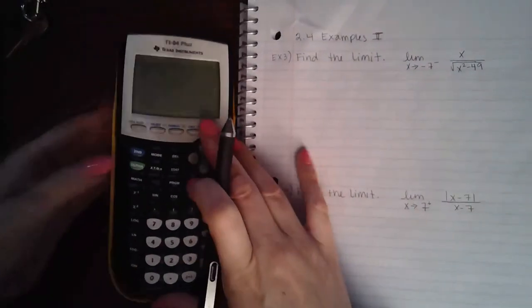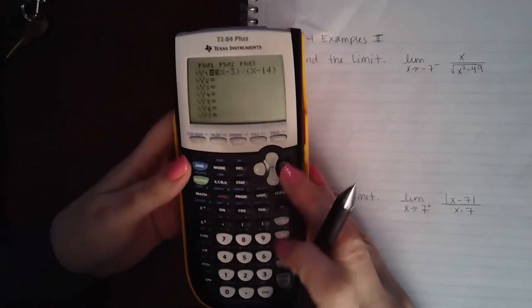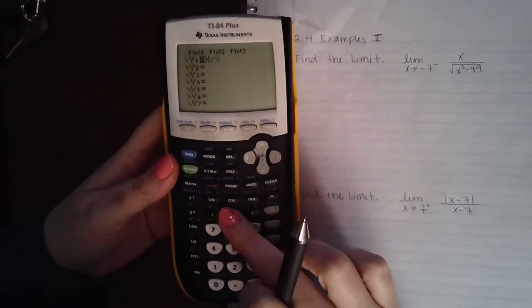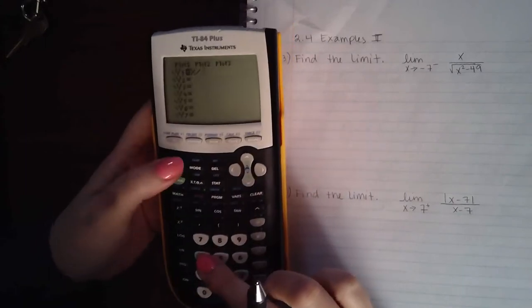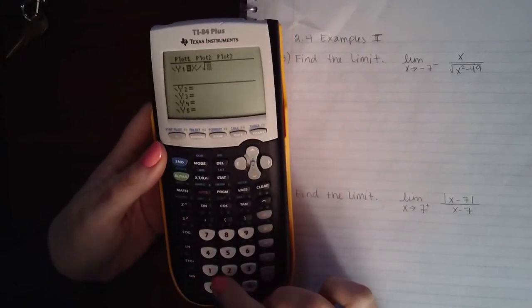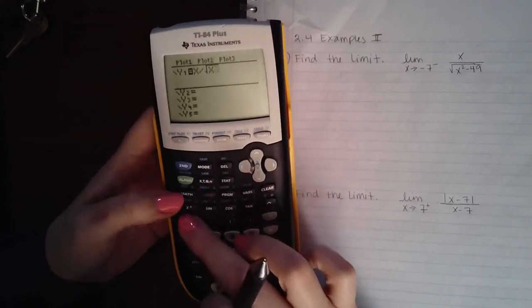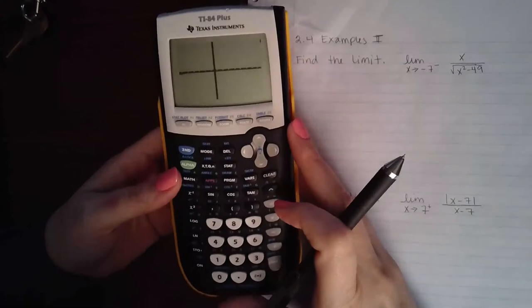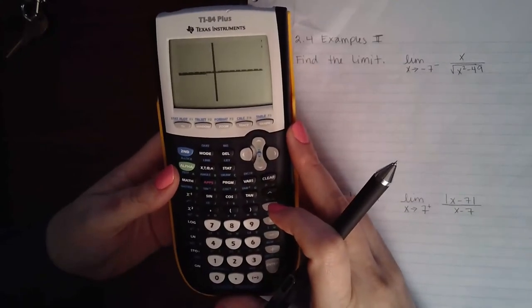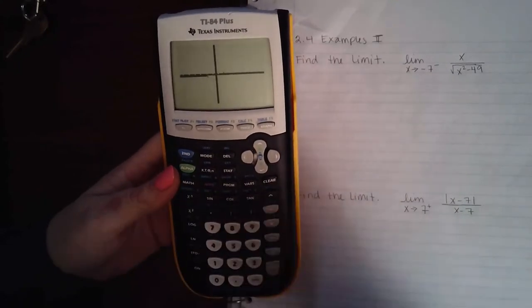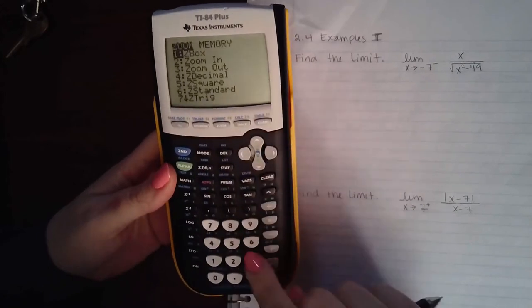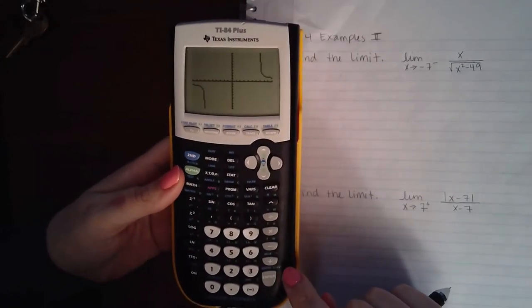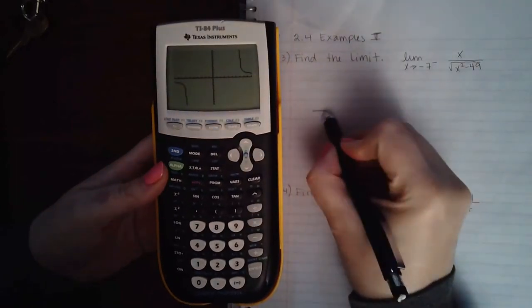I'm going to use my calculator and plug in this function: x over the square root of x squared minus 49. I'll go to graph, zoom to standard, and I get this graph. I'm going to draw that graph.